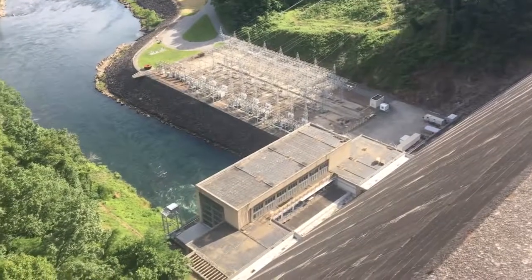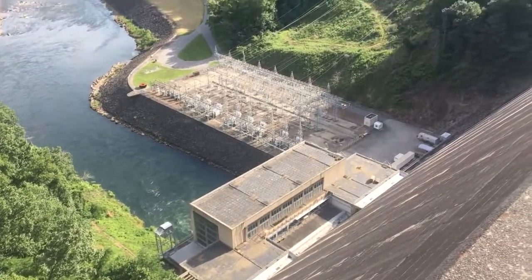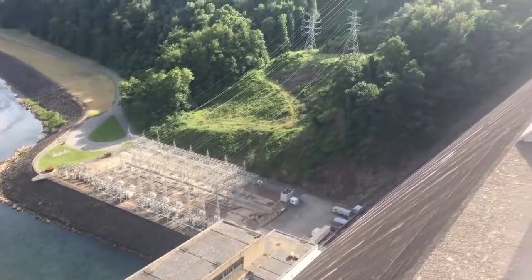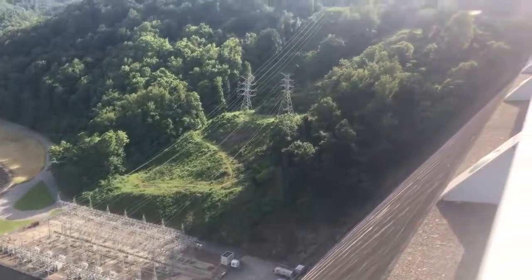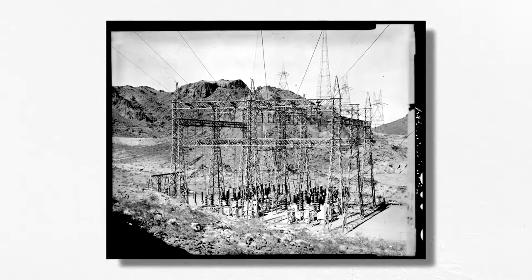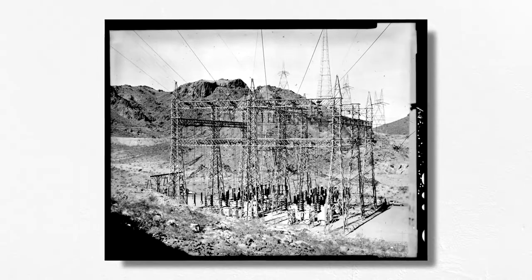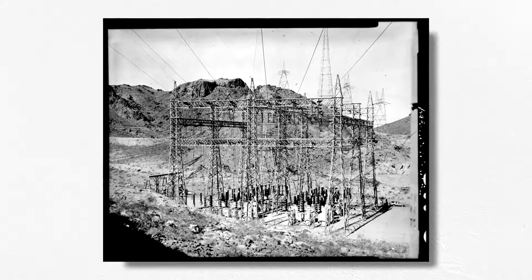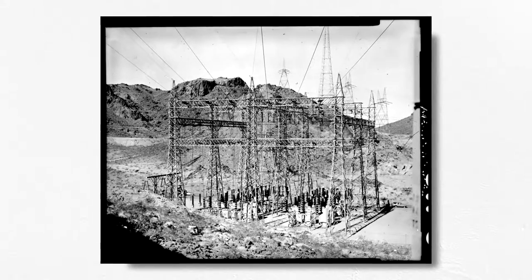Transformers at power plants boost the voltage, up to 100,000 volts and sometimes much higher, before sending electricity on its way over transmission lines. This lowers the current in the lines, reducing the wasted energy, and making sure that as much power as possible makes it to the customers at the other end.